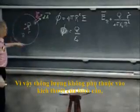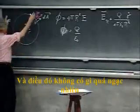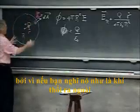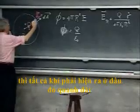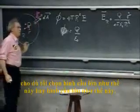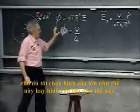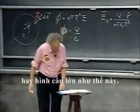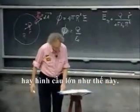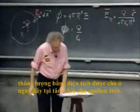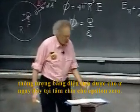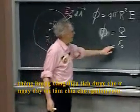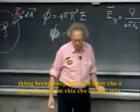That's not so surprising because if you think of it as air flowing out, then all the air has to come out somehow, whether I make the sphere this big or whether I make the sphere this big. So the flux being independent of the size of my sphere — the flux is given by the charge right here at the center, divided by ε₀.